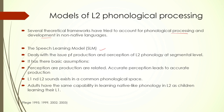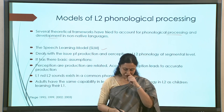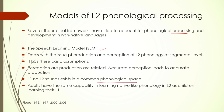One model is the SLM — speech learning model — proposed by Flege in 1995 and updated many times. This model deals with the production and perception of L2 phonology at the segmental level. It has three basic assumptions: first, perception and production are related — they are not separate processes; if perception is accurate, then production will also be accurate. Second, L1 and L2 sounds exist in a common phonological space. Third, adults have the same capability as children in learning native-like phonology in L2. These are the basic presuppositions of the speech learning model.